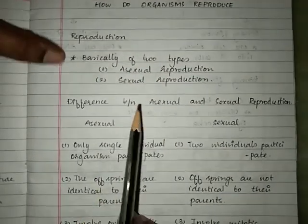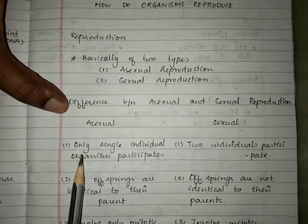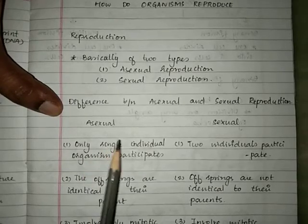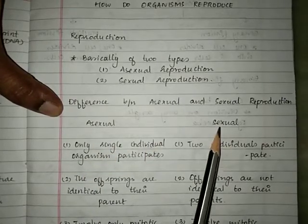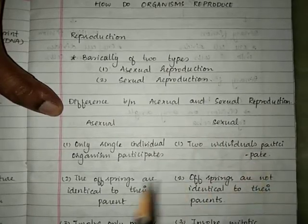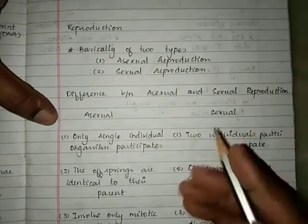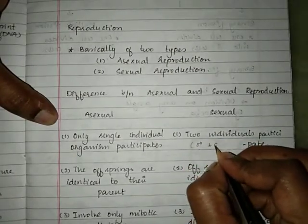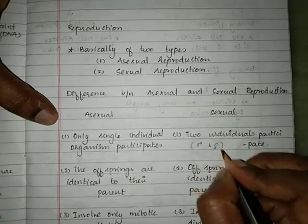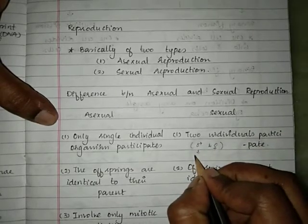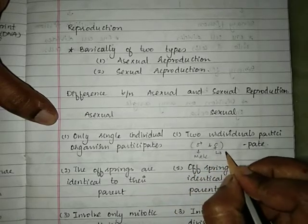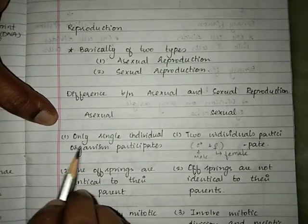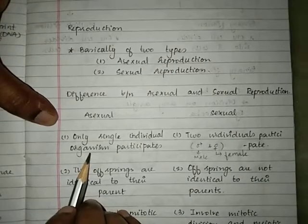In asexual reproduction, there is only a single individual that is going to participate in the process of reproduction to produce the next generation. Whereas in sexual reproduction, there are going to be two individuals that participate — one is the male and the other is the female organism. In asexual reproduction there is only one individual, with no male and female differentiation.